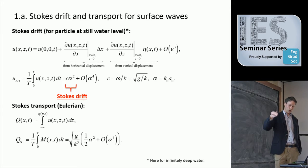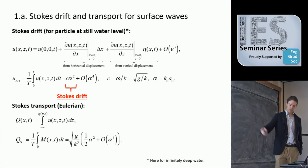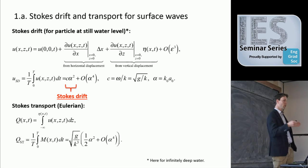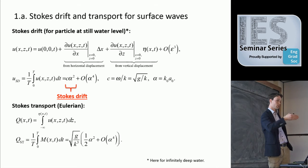That is a Lagrangian velocity, if you like. You can also take the linear velocity field and integrate from the bottom to the free surface, and you'll see there's a mean term from the same averaging procedure that results. So in other words, if you set up this problem, there's actually a mean flow that takes place in the tank.